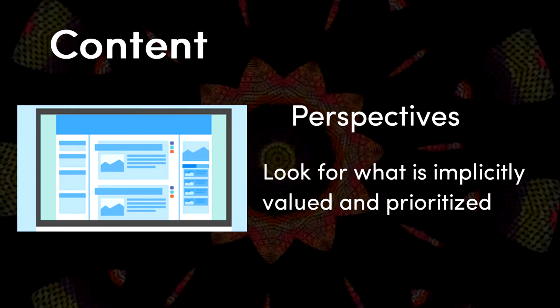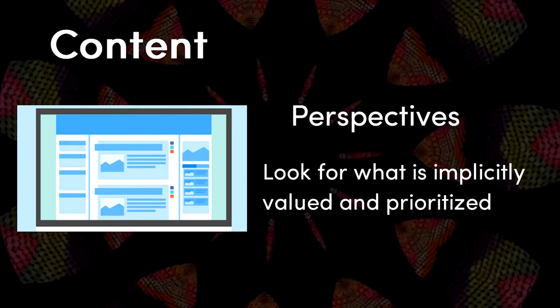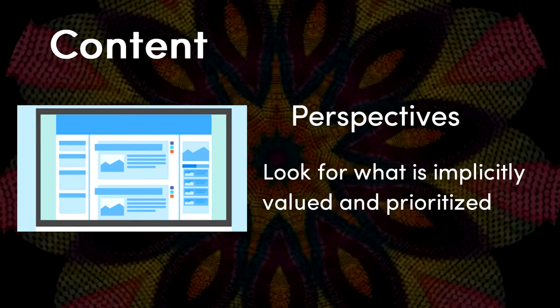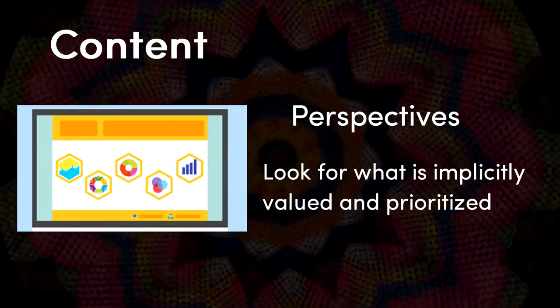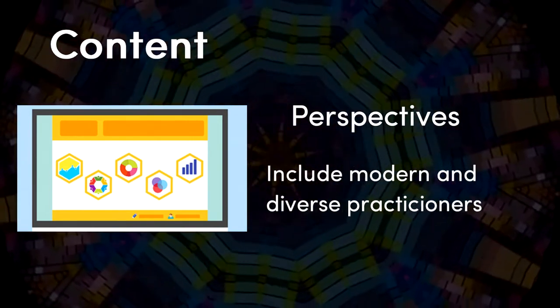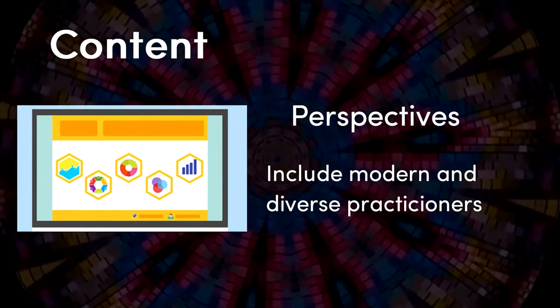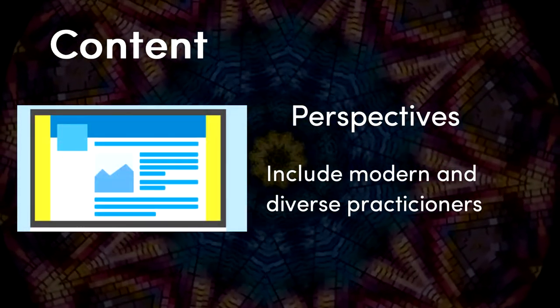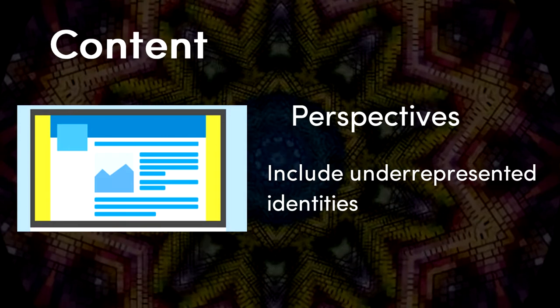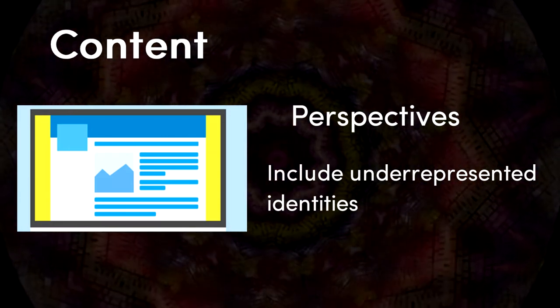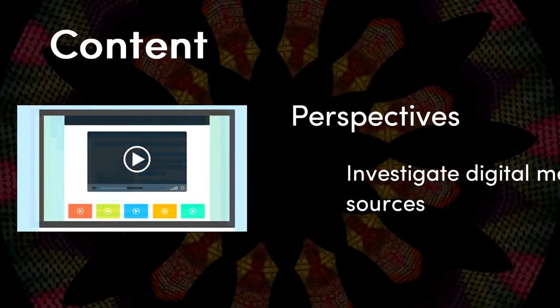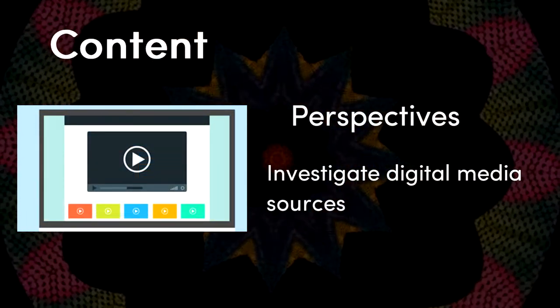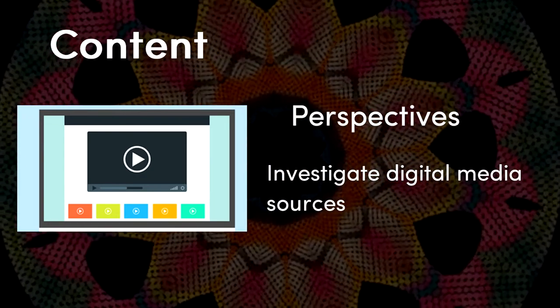Acknowledge the perspectives that are implicitly valued and prioritized within your course. Look for missing perspectives and devise plans that are consistent with your course objectives to address the gaps. Show not only classic authors and examples, but also modern, diverse practitioners who use a technique or theory. Consciously include underrepresented identities in the field, take gender, race, sexual orientation, and more into account.